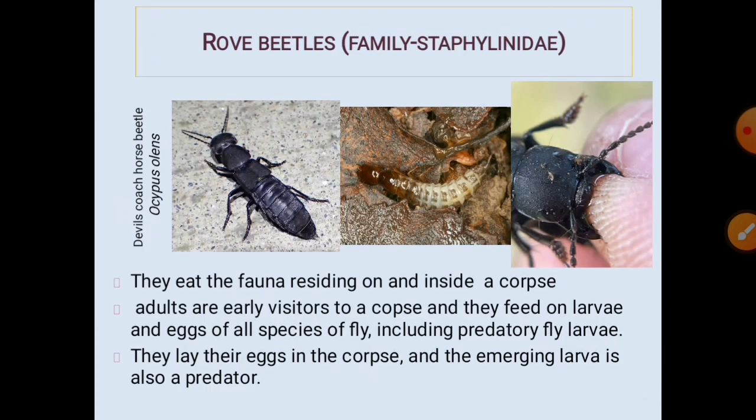Rove beetles from the family Staphylinidae: they eat the fauna residing on and inside a corpse. Adults are early visitors and feed on the larvae and eggs of all species of flies, including predatory fly larvae. They lay their eggs in the corpse and the emerging larvae are also predators. They have very well-developed, strong sclerotized mandibles with which they feed on the corpse and on the maggots.